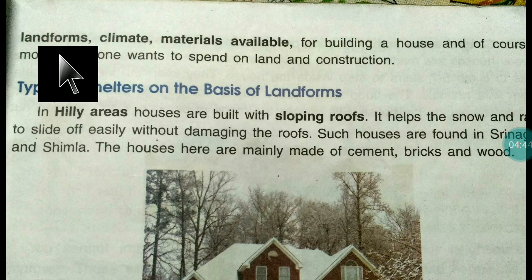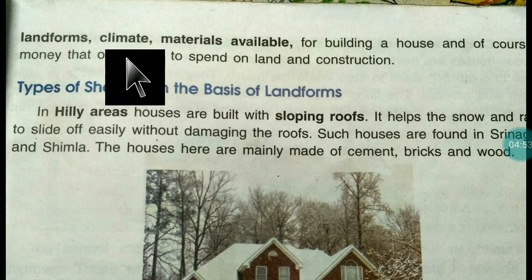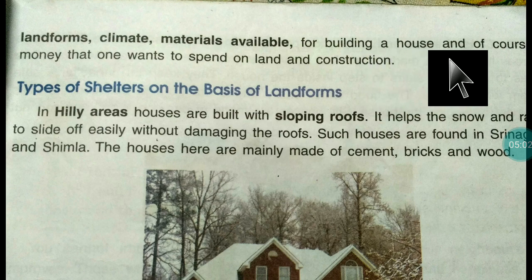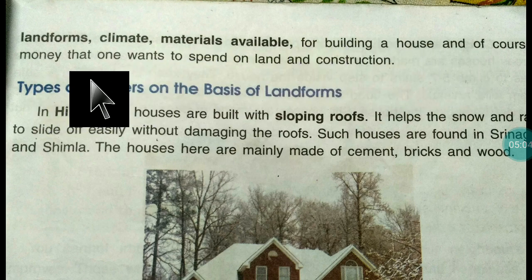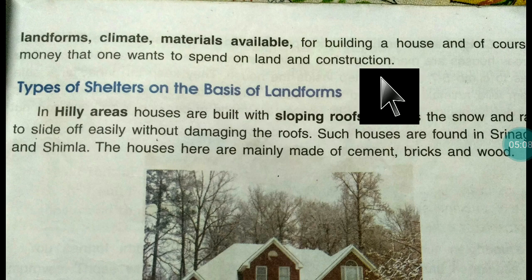Landforms also include deserts and islands. Houses are constructed according to those areas. Climatic conditions — very hot or cold regions — also determine how houses are built. Other factors include the materials available, market accessibility for building materials, and of course the money one wants to spend on land and construction.